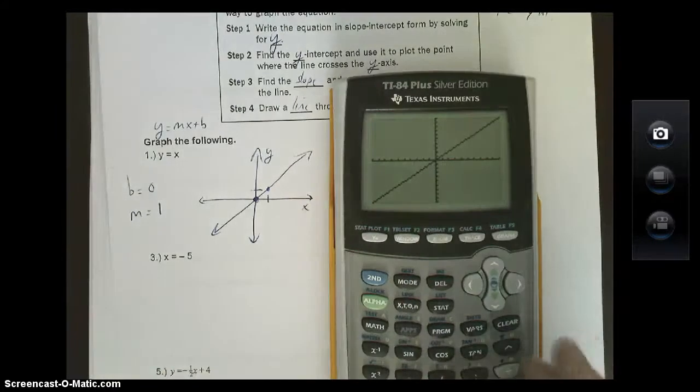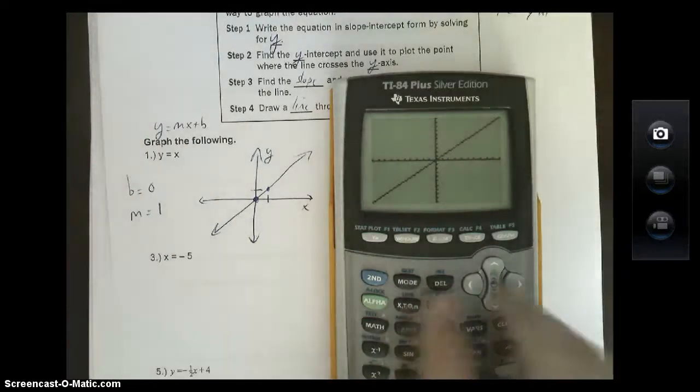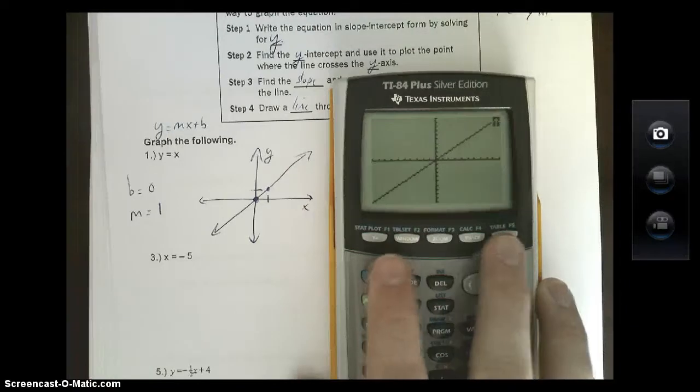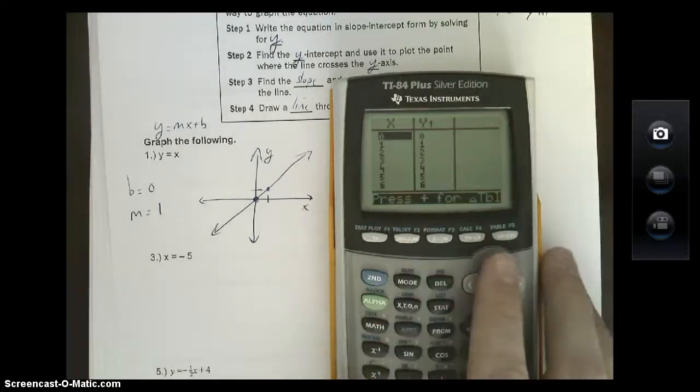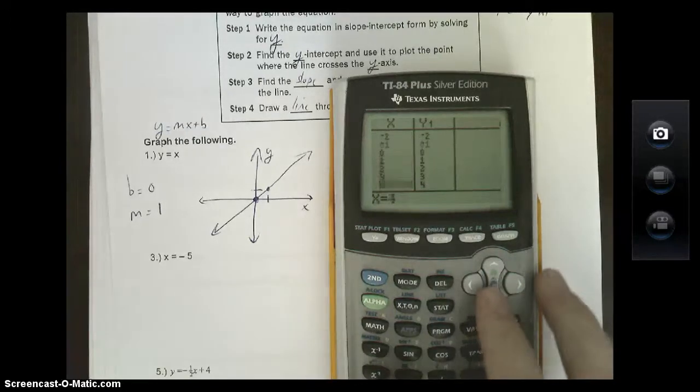Now that's all good, but you know full well that we need to have points in order to graph our line. So the next trick is to hit second and then graph again. This is going to pull up our table menu, which you can see right above the graph button. And now we have a list of points that we can plot. Zero, zero, one, one, which is what we had. And there's also some more here if you need to.